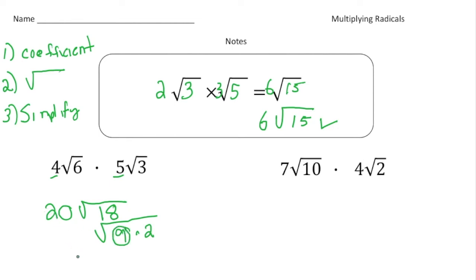Right, so 18 I know is going to be 9 times 2, and 9 is a perfect square which is a 3. Right, so I'm going to take the 3 out and multiply it by the 20. So 20 times 3 gives you 60 radical 2, and there's your answer.